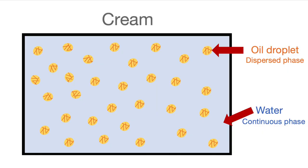Emulsions are where you have two different liquids that don't mix — usually it's oil and water. One phase is dispersed as these tiny, tiny droplets; that's called the dispersed phase. The other phase that holds all those droplets is called the continuous phase. So in cream, the dispersed phase is those oil droplets, and the continuous phase is water.